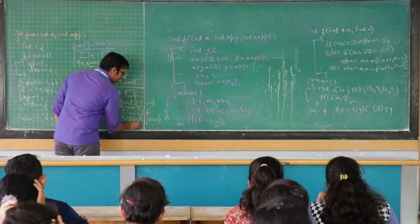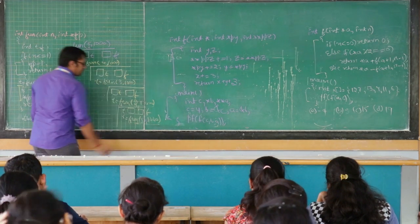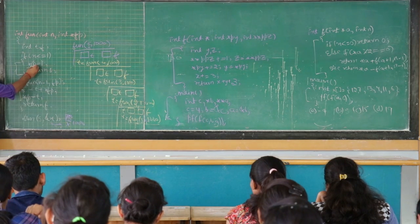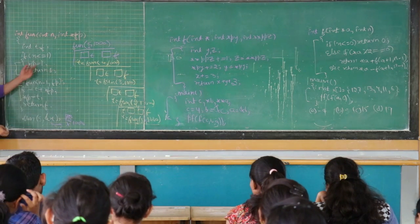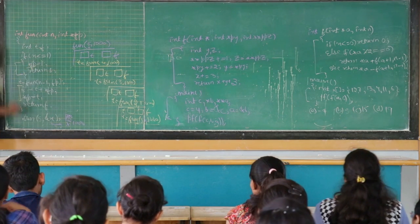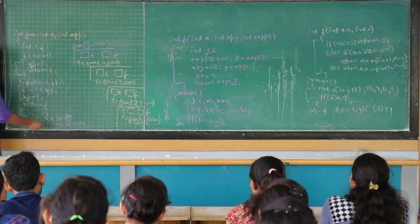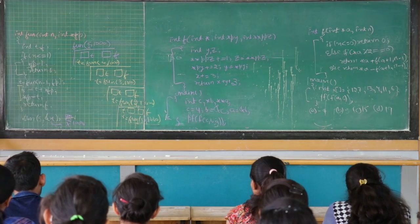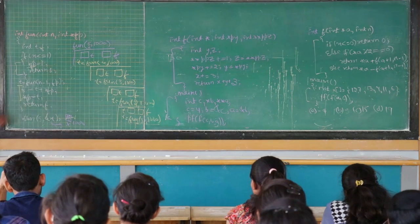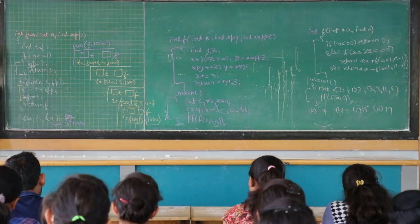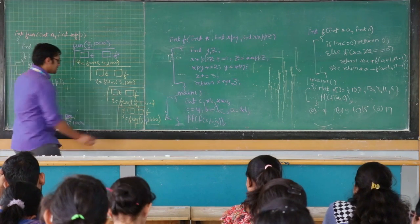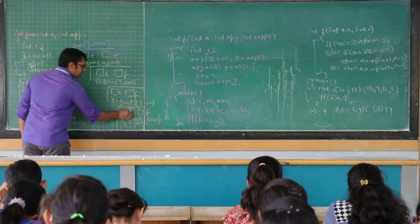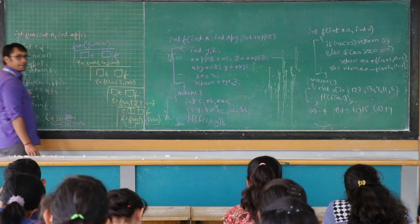Now, when we got fun of 1, 1000, the base case condition is true. So *fp is equal to 1 — that means this value will become 1. And we are going to return 1, so this 1 value is now stored in t.